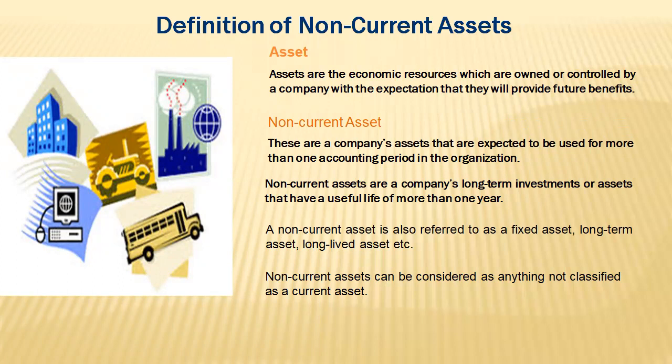Assets are resources that are owned or controlled by an organization with the expectation that they will produce future benefits. When an organization buys a building, it is expected that in the future they will be able to use that building to generate revenue.